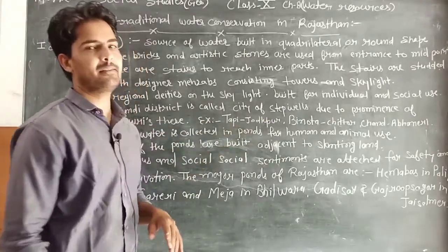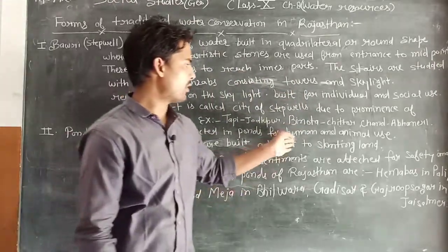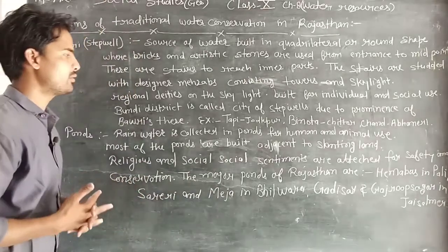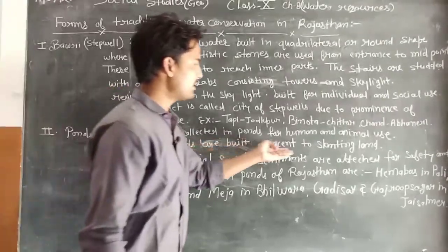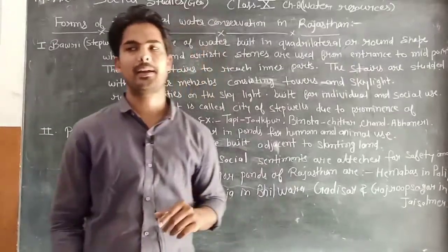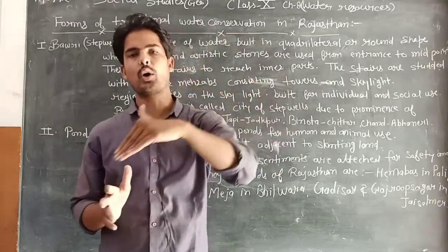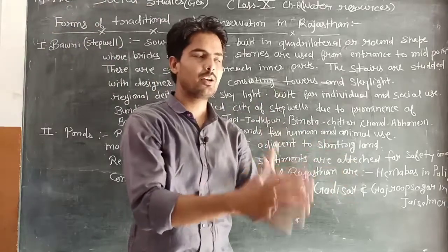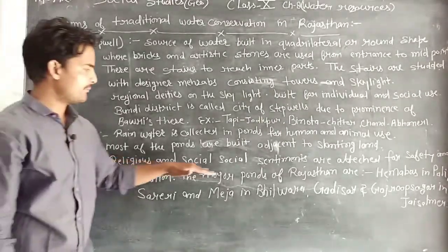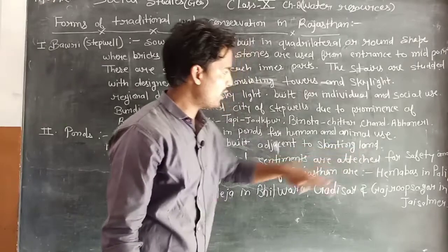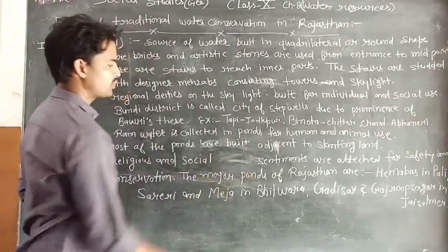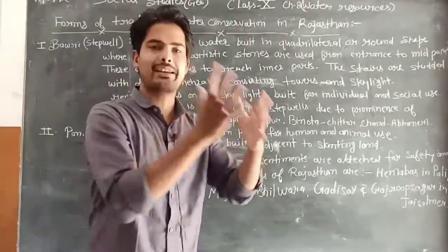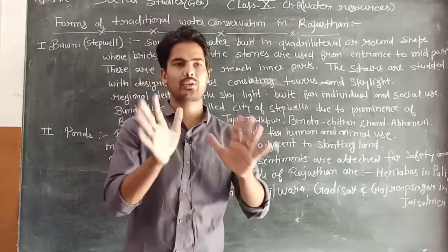The next source is the pond, or talaab. Rainwater is collected in ponds for human and animal use – both humans and animals can use this water. Most ponds are built adjacent to slanting lands (slopes), because rainwater flows from high to low ground and naturally collects there. Religious and social sentiments are attached to ponds for their safety and conservation, so that people do not pollute them and keep them safe.